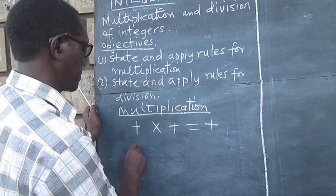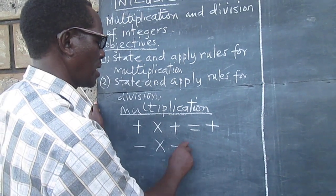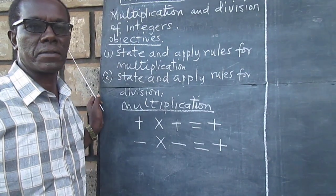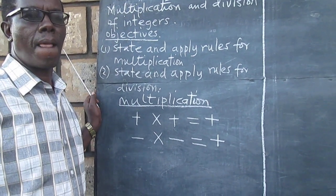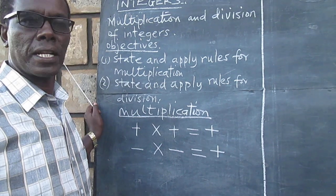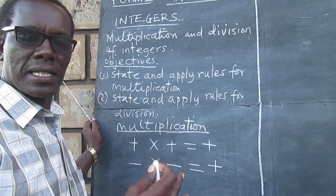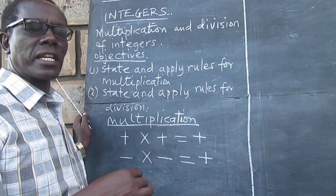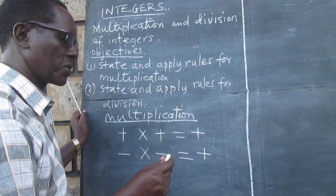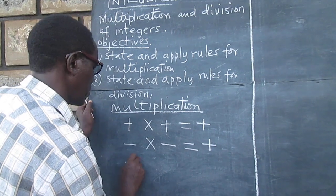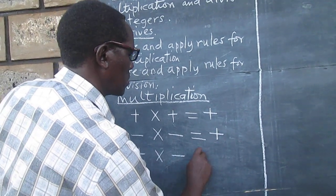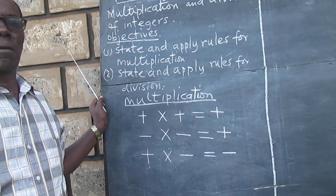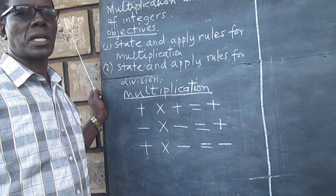Negative times negative will give us positive — that is rule number two. And finally, when the signs are different, the result is always negative. We can now look at some examples.